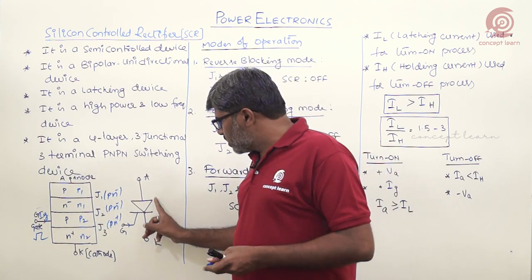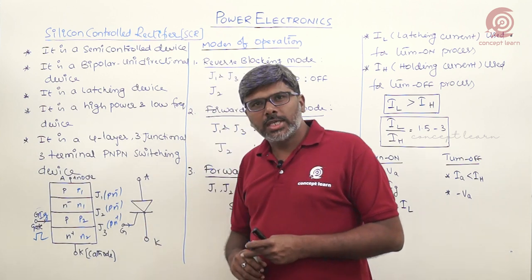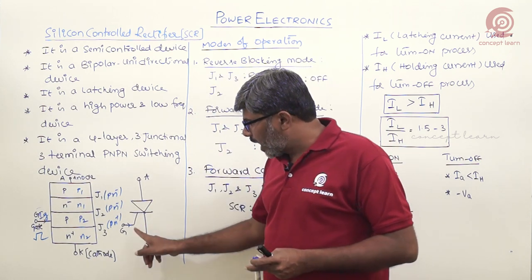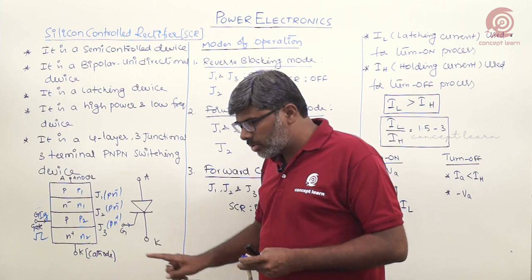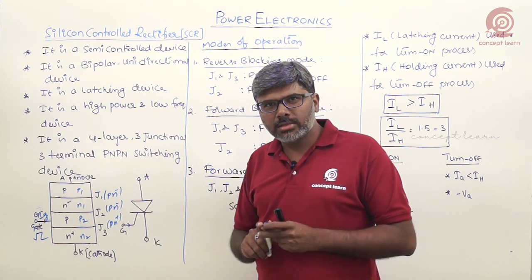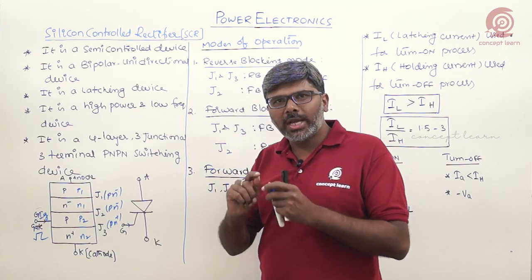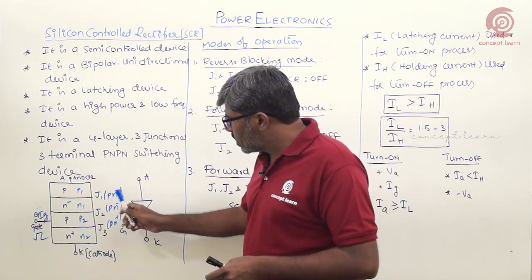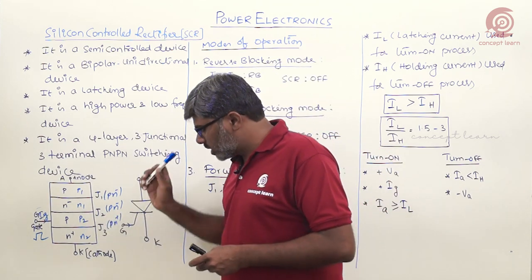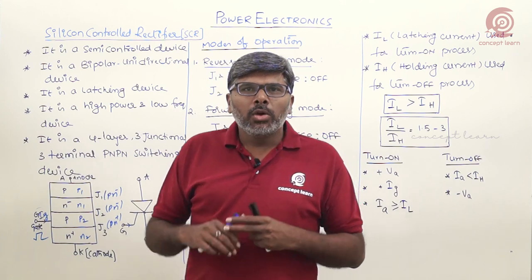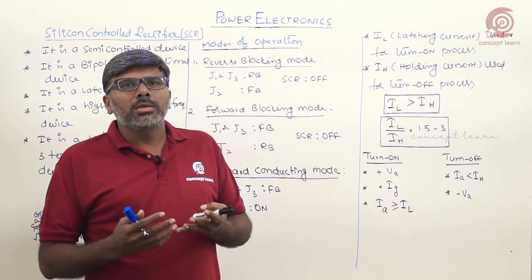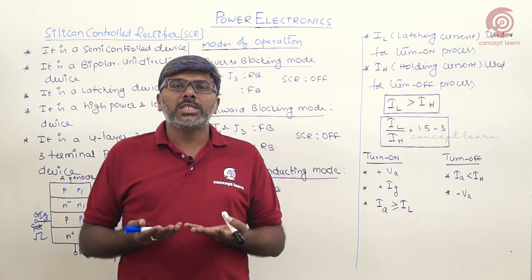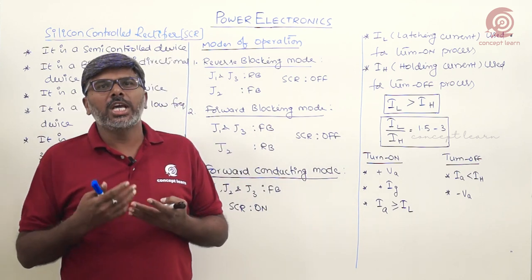This is the symbolic representation of SCR showing anode, cathode, and gate. The arrow indicates that we are injecting charge carriers — supplying gate current — to turn on the SCR device. Now coming to the operational characteristics, the operation of SCR can be explained with the help of static IV characteristics.